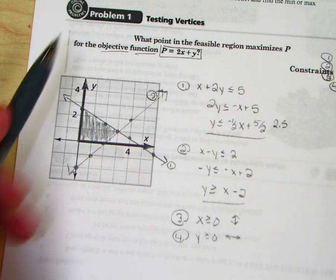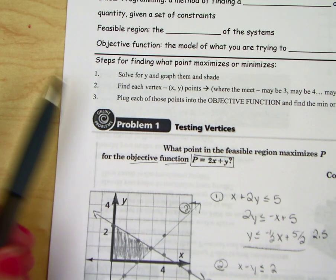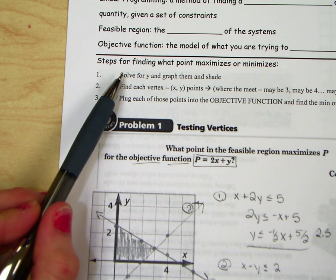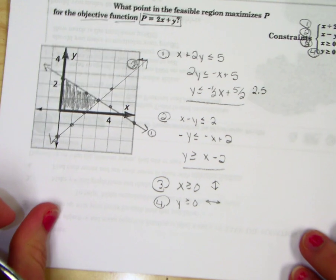Okay, guys. So what are we going to do with this area here? You're going to pick test points. So if you look at step 2, we solved them. Step 1, we solved them and we graphed them. Step 2, we need to find each vertice. Okay, the vertices are the corners.